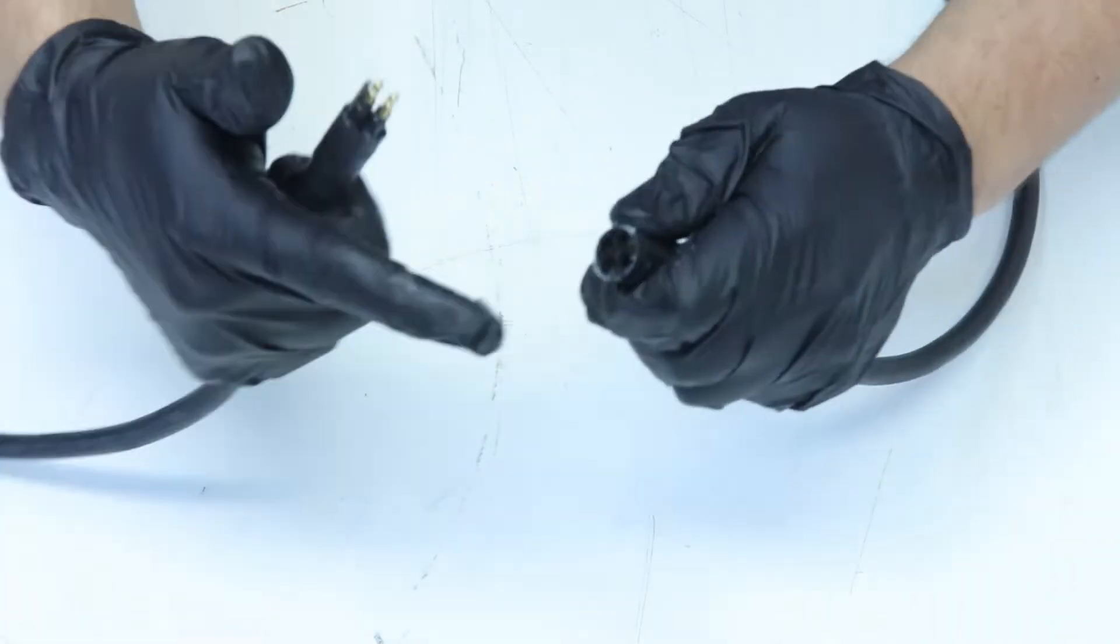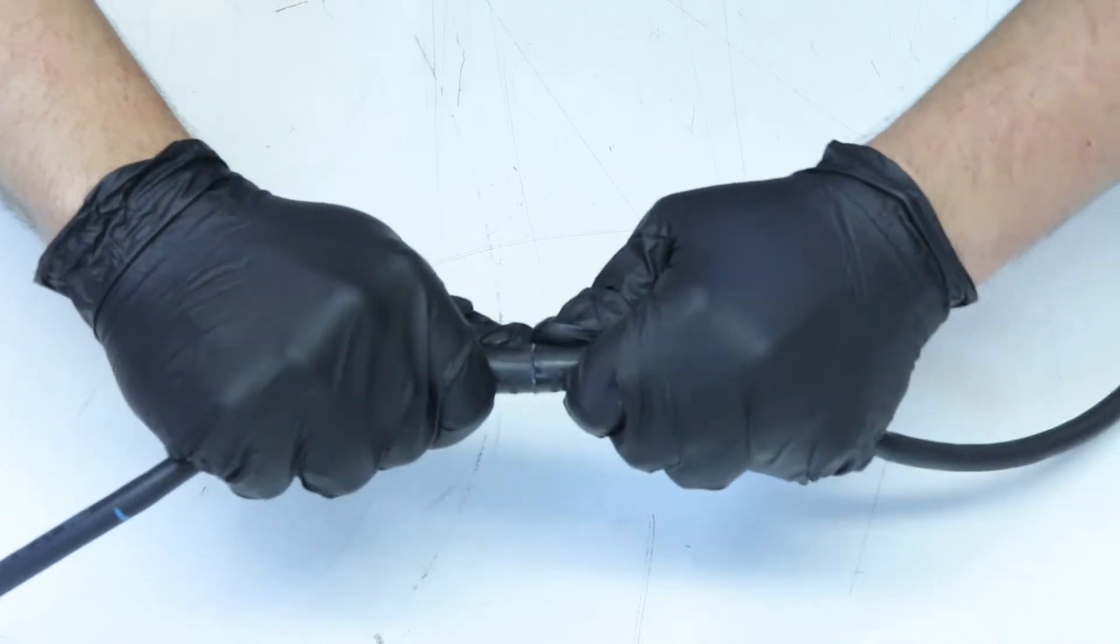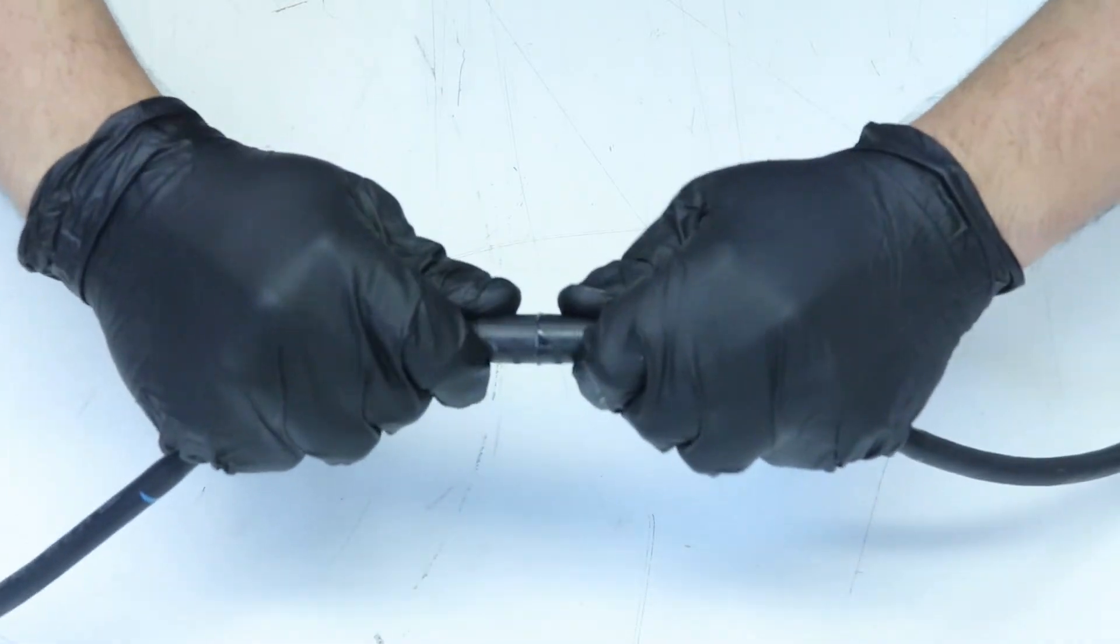Wipe away the excess, pull the whips apart, then mate them again. Repeat until no excess grease is squeezed out.